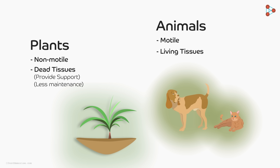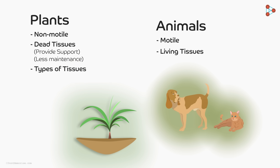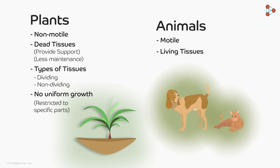Almost all tissues in animals are living tissues. These tissues need nutrition which they get from the organism's body. There are two types of tissues in plants: one type divides throughout its lifetime, while the other does not have the ability to divide. Plants do not grow uniformly — their growth is restricted to specific parts where the dividing tissues are found. Other parts have non-dividing tissues.